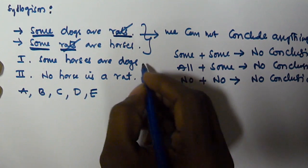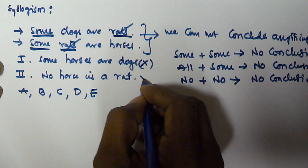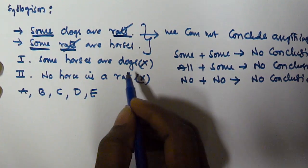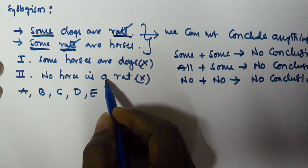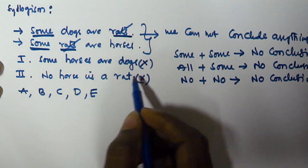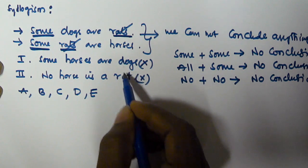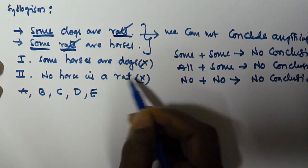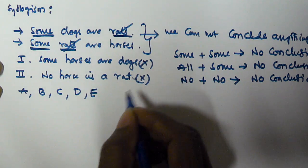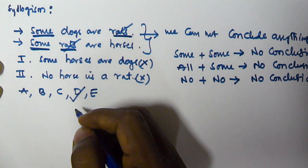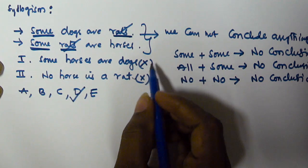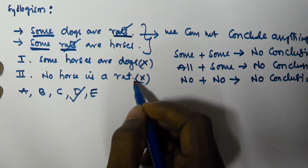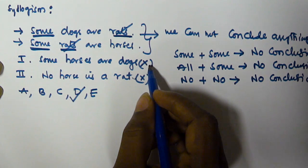Since we cannot conclude anything, the given two conclusions are going to be false. We cannot prove whether the given two conclusions are true or not. So that means these conclusions themselves are going to be false, and we have to select option D.